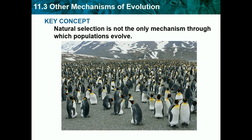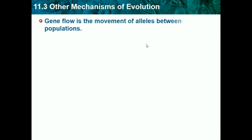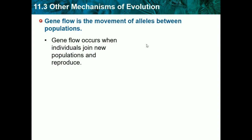Natural selection is not the only mechanism through which populations evolve. Moving to 11.3, Other Mechanisms of Evolution. Gene flow is the movement of alleles between populations — the genes are literally moving through the population. Gene flow occurs when individuals join new populations and reproduce.